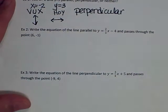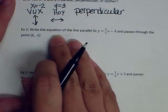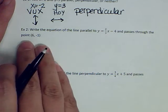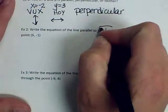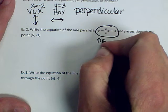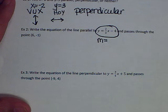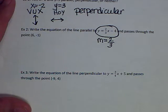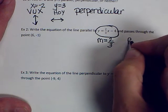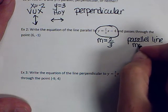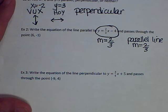Example 2: we're going to write the equation of the line that's parallel to y equals 2/3 x minus 4 and passes through the point (6, -1). The slope of 2/3 x minus 4 is 2/3. Since we want a parallel line, it will have the same slope — 2/3.